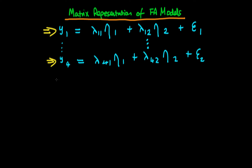We spoke about how we could actually stack these equations on top of each other, whereby we could write our system of equations — our system of dependent variables Y — as equal to some matrix, which I'm going to call capital lambda, times our vector of unobserved factors eta, plus our vector of epsilon 1 and epsilon 2. But we spoke about some of the problems with this representation: implicitly each component in our left-hand side variable, as well as the components of eta, are implicitly n by 1 vectors, because we've got n observations.